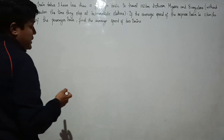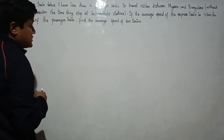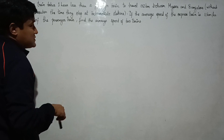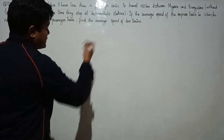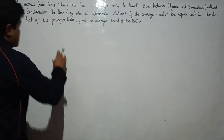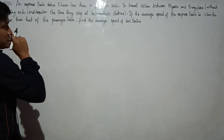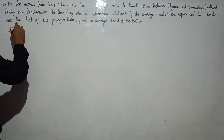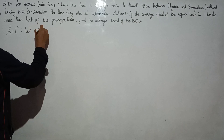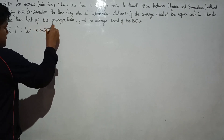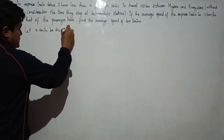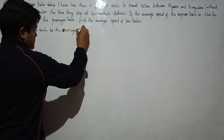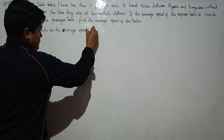We need to find the average speed of the two trains. We express the speed of the express train in terms of the passenger train. Let x kilometers per hour be the average speed of the passenger train.